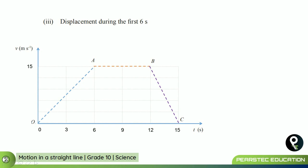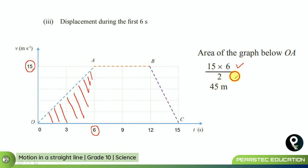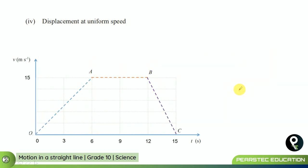Now, the displacement during the first six seconds is the area under the OA part of the graph. That area is 15 multiplied by 6 divided by 2, which equals 90 divided by 2, giving a displacement of 45 meters.